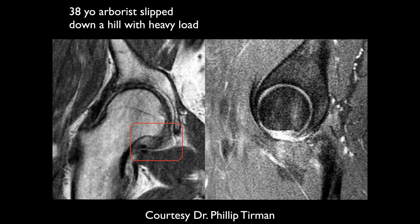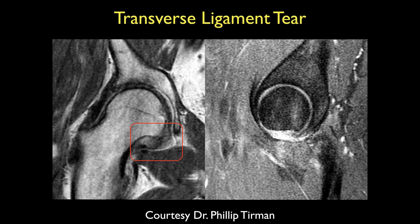The transverse ligament is as hard as bone and an extremely strong structure. It is unusual to see it tear even with dislocation. This was a case from Philip Termina, and seeing such a tear in clinical practice is rare — it would require a significant twisting injury.